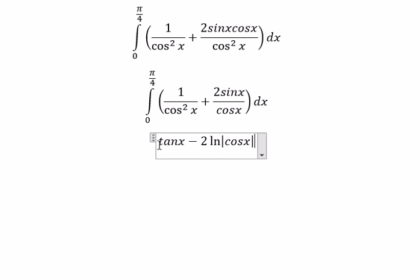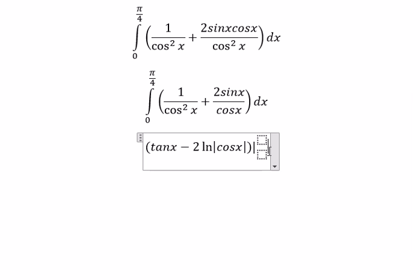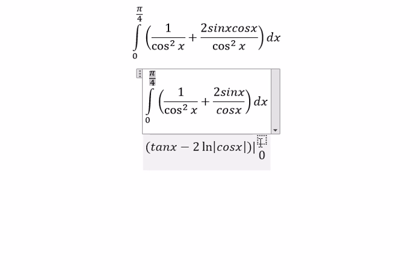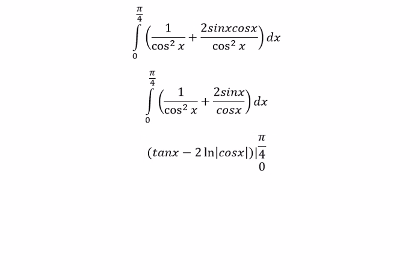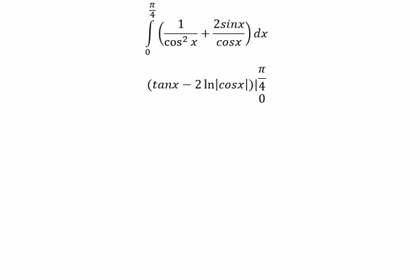And we have the bounds in here. So we got the final answer. That should be about 1 minus 2 ln, and we have the square root of number 2 over 2.